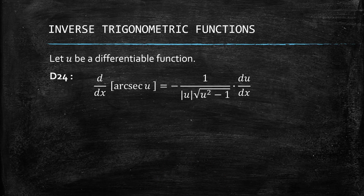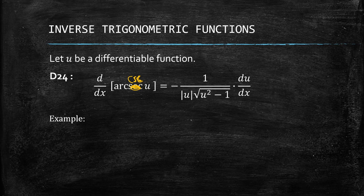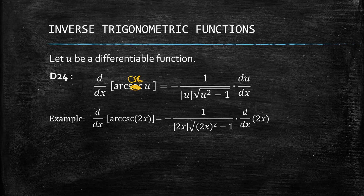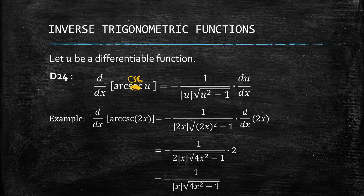Now we're done with arcsec. Let's have arccsc. For arccsc, it's just the negative version of arcsec. So we have negative 1 over the absolute value of u times the square root of u squared minus 1, times du/dx. For example, arccsc of 2x: we apply the formula, take the absolute value of 2 out, which is just 2, cancel out, and we get negative 1 over the absolute value of x times the square root of 4x squared minus 1.